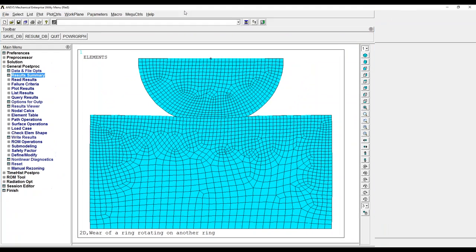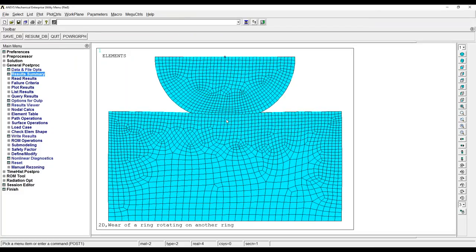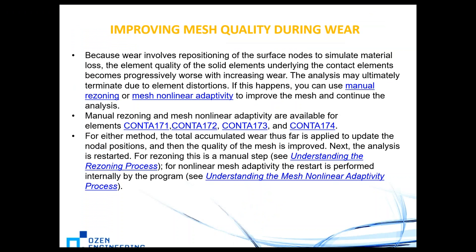For example, one model shown has already converged — the amount of wear here is not too much, so the elements are somewhat distorted and you can see the wear surface, but it's not too bad. If wear is too much, the elements will be really distorted. In that case, you can use manual rezoning or mesh nonlinear adaptivity (the NLAD command). For either method, the total accumulated wear is applied to update the nodal positions, the mesh quality is improved, and then the analysis is restarted.